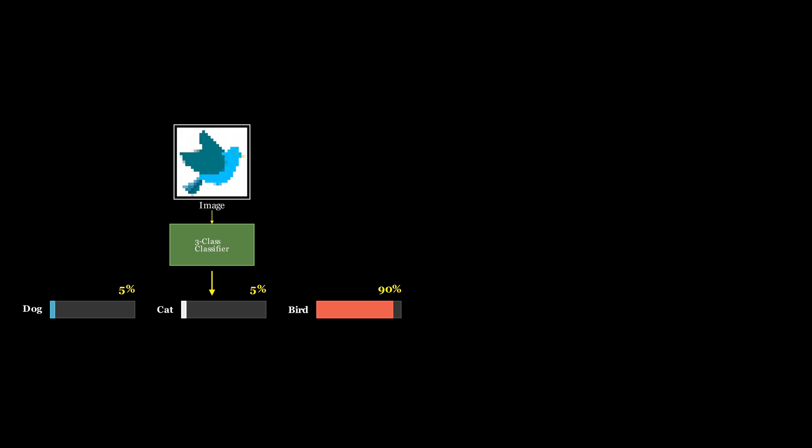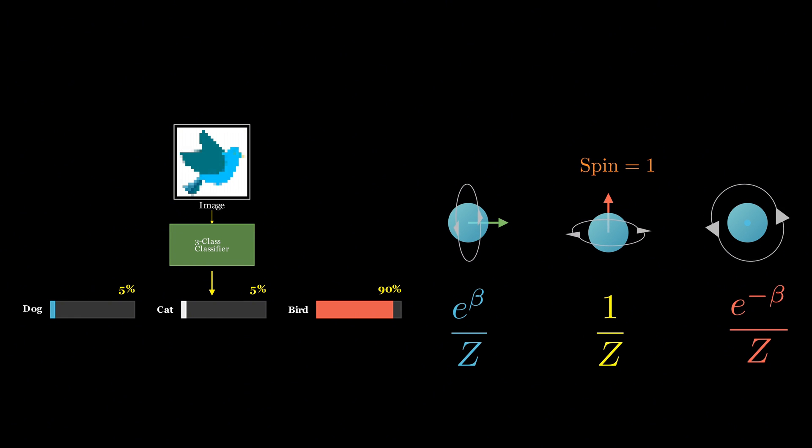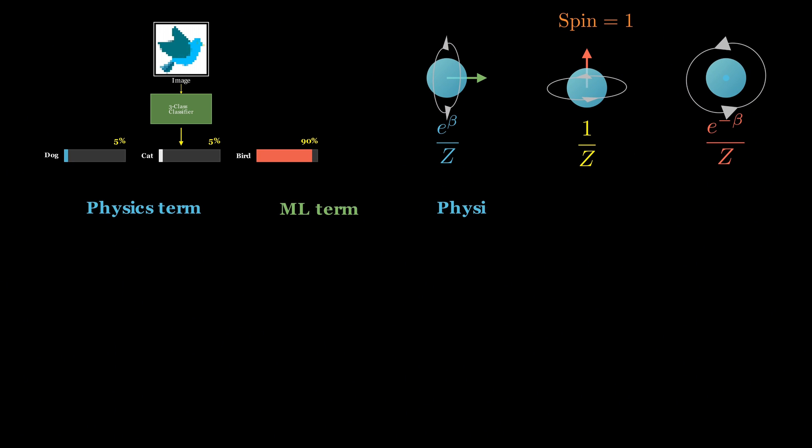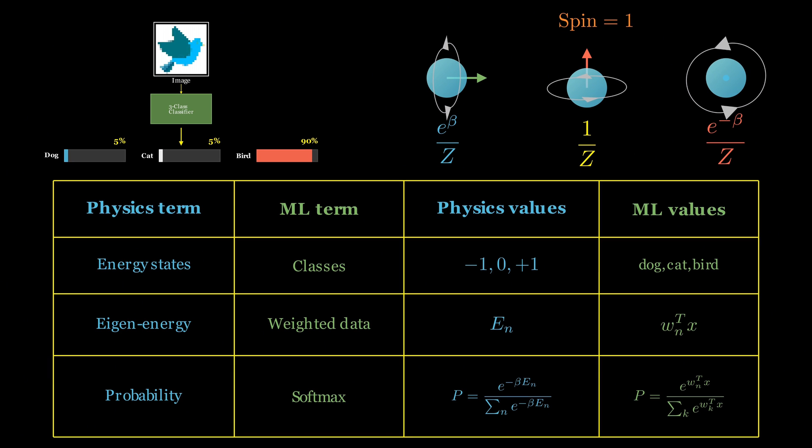But here's the revelation. This is exactly what the spin 1 system does in physics. It also produces three probabilities, one for each energy level. So if we think of these two systems as two translations of one same text, then each element in one language has a counterpart in the other.